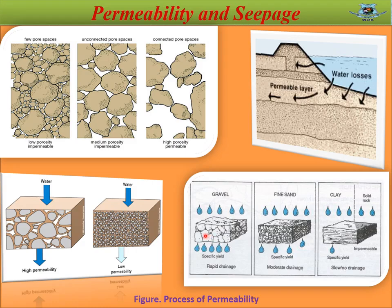Gravel exhibits rapid drainage due to high porosity. Fine sand exhibits moderate drainage due to medium porosity. As clay has no or little porosity, it exhibits slow or no drainage. The process of water passing into the soil is called permeability.